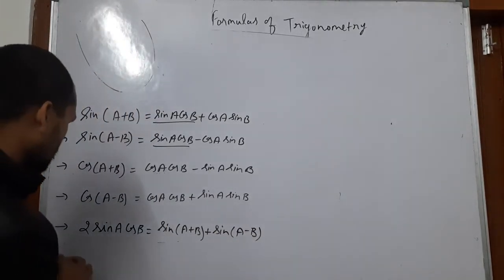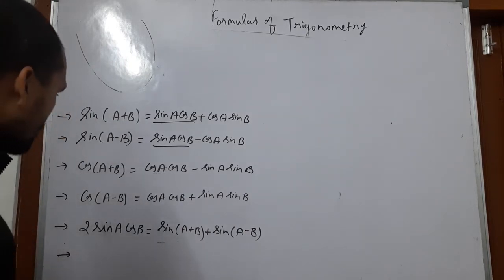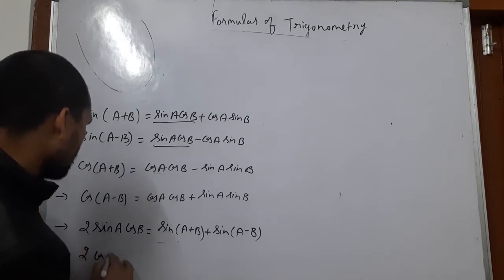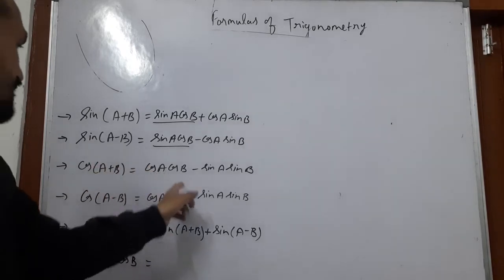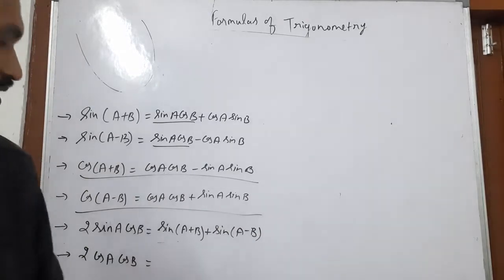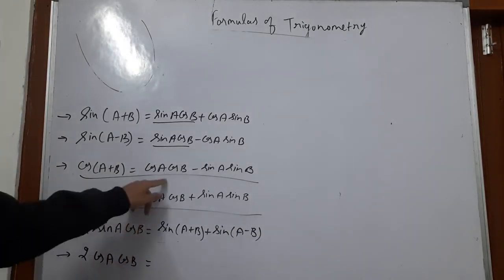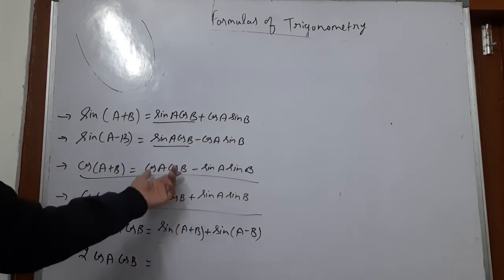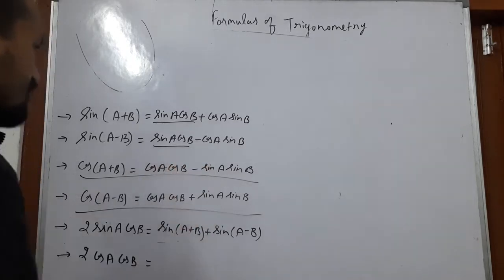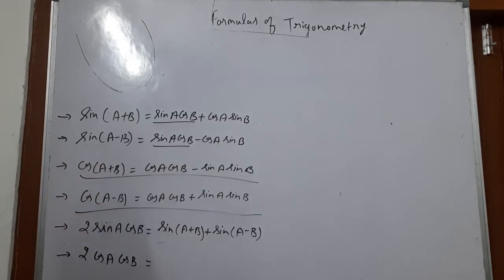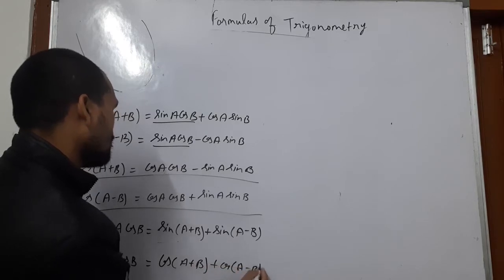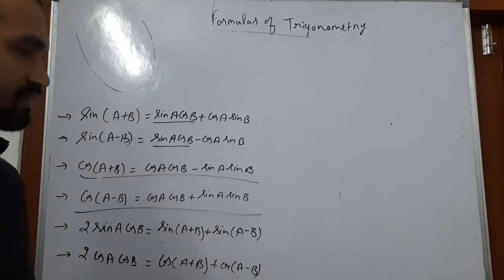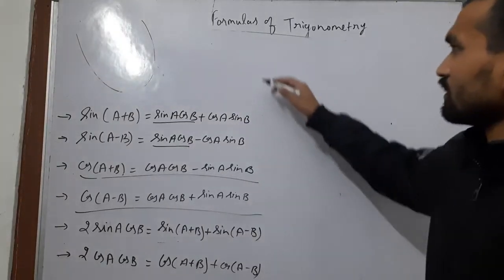Now the next one is 2 cos A cos B. We will derive this relation from the identities cos A plus B and cos A minus B. If we add these two identities, then 2 cos A cos B will result, and the sin A sin B terms will be cancelled out. So 2 cos A cos B is equal to cos A plus B plus cos A minus B — simply by adding these two identities.